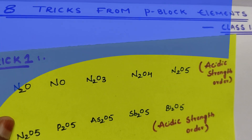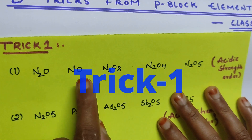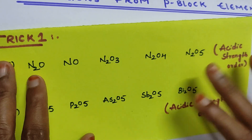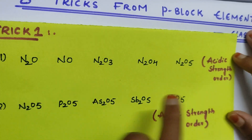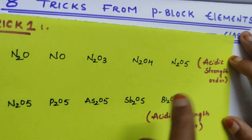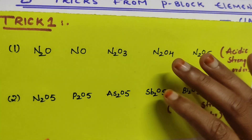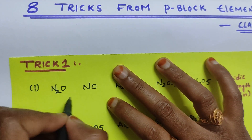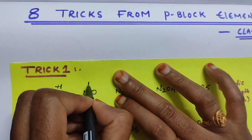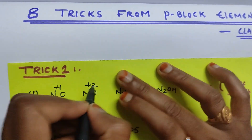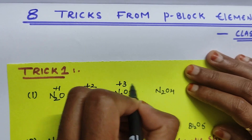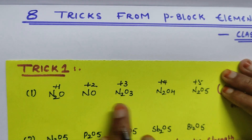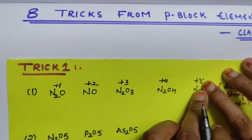Coming to trick number one: N2O, NO, N2O3, N2O4, N2O5 — they're asking us to find the acidic order strength. What you need to do is first calculate the oxidation state of nitrogen: N2O is +1, and it is +2, +3, +4, and +5.